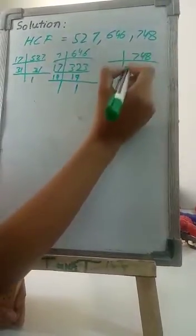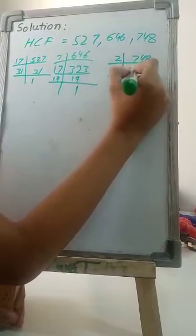Our next question is 748 divided by 2 equals 374, divided by 2 equals 187.